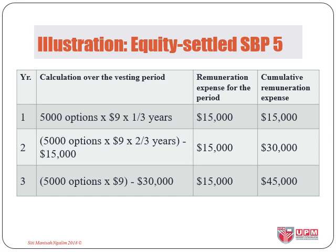For the recording of SBP expense, regardless of the share price at the end of year three, we still need to recognise the expense throughout the vesting period. For year one, we record SBP expense for 5,000 options at $9 fair value for one-third of the vesting period. For year two, we record SBP expense for 5,000 options at $9 for two-thirds minus previously recognised amounts. At end of year three, we record SBP expense for 5,000 options at $9 for the full three-year period minus previous recognition. In total, SBP expense and total equity will be $45,000.